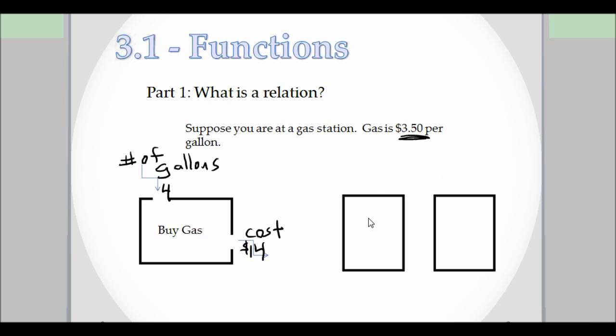So let's put that in. Number of gallons and the cost. So we put in four gallons, it's going to cost us $14. So that's exactly what a relation is. We're associating something, the number of gallons, with an output, which would be the cost.